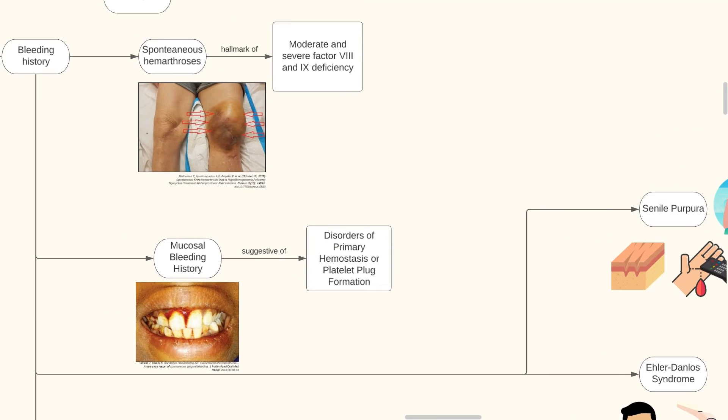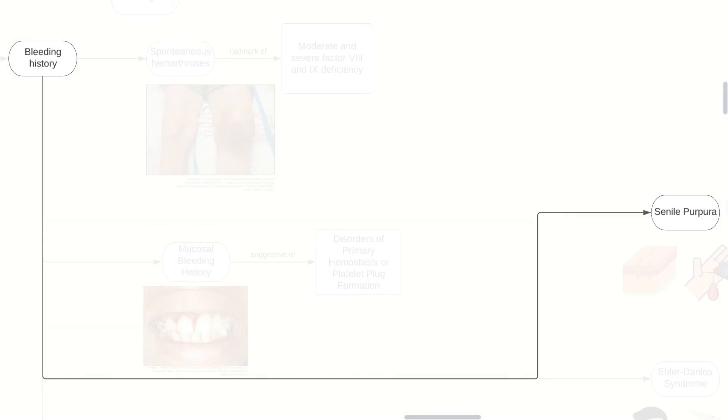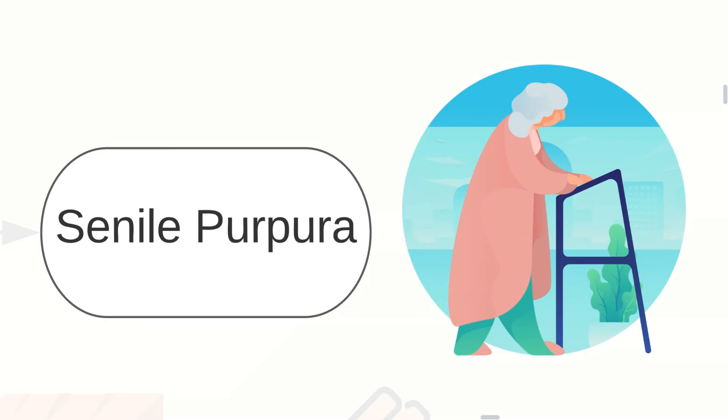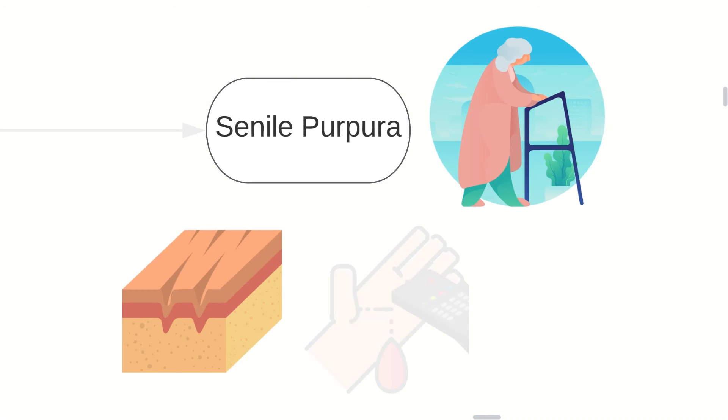A bleeding history of Ehlers-Danlos Syndrome may also be acquired by easy bruisability or by hyperflexion or hyperextension of joints. Senile purpura may also be identified by history alone. These usually occur in older people which have changes in their skin and subcutaneous tissue and may have possible bleeding upon minor trauma such as shown here in the image.